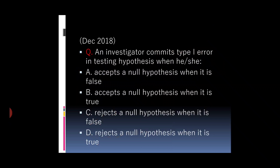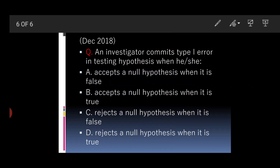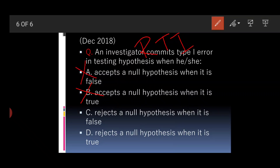Next question: An investigator commits Type 1 error when he or she: (a) accepts a null hypothesis when it is false, (b) accepts a null hypothesis when it is true, (c) rejects a null hypothesis when it is false, (d) rejects a null hypothesis when it is true. Applying the mnemonic RT1 — rejecting a true null hypothesis is Type 1 error — the answer is D.